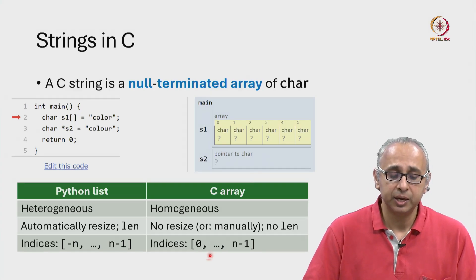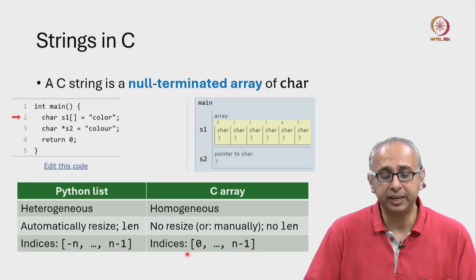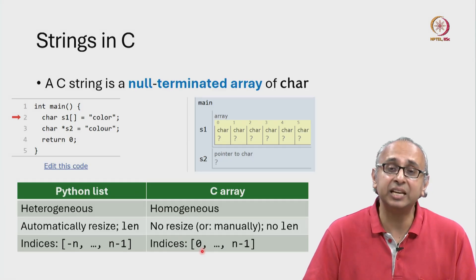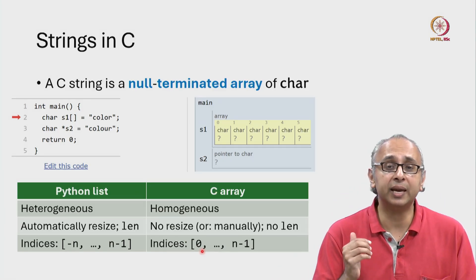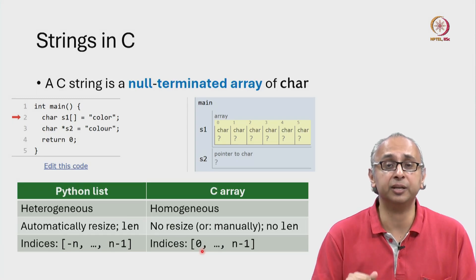In contrast, in C, you can only do non-negative indexing. If you actually put a negative index within square brackets, you will get some undefined behavior.